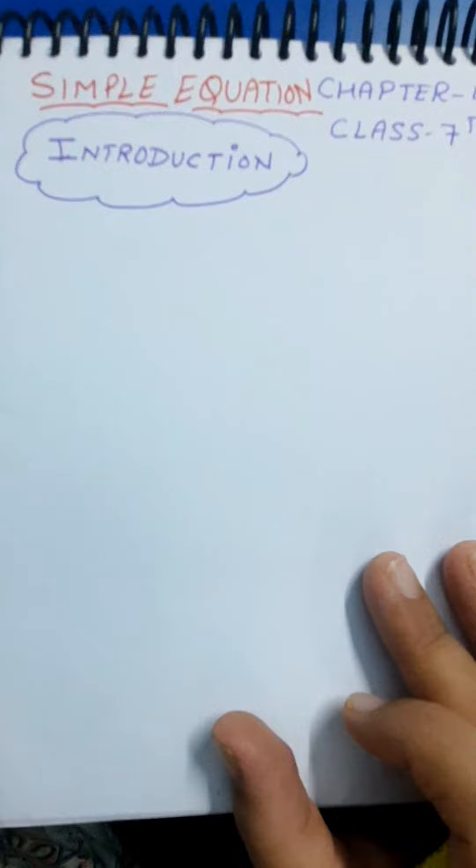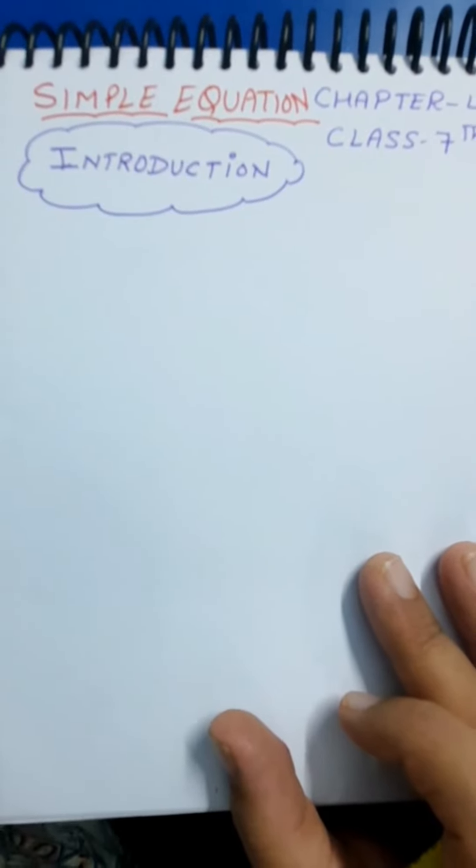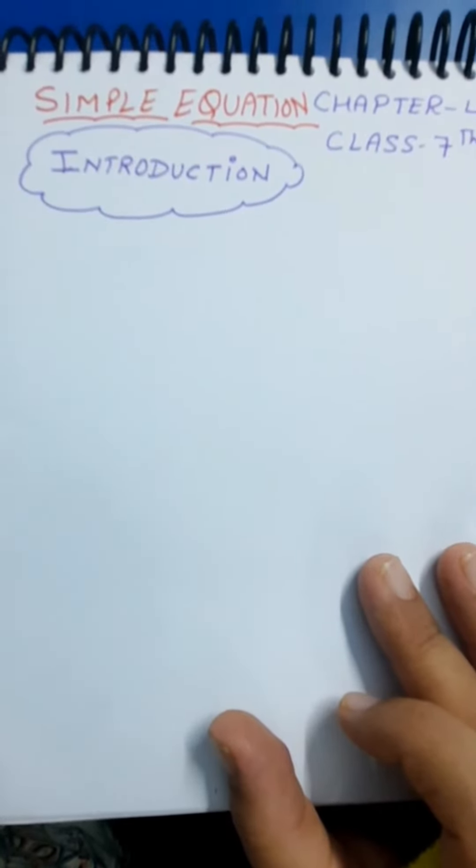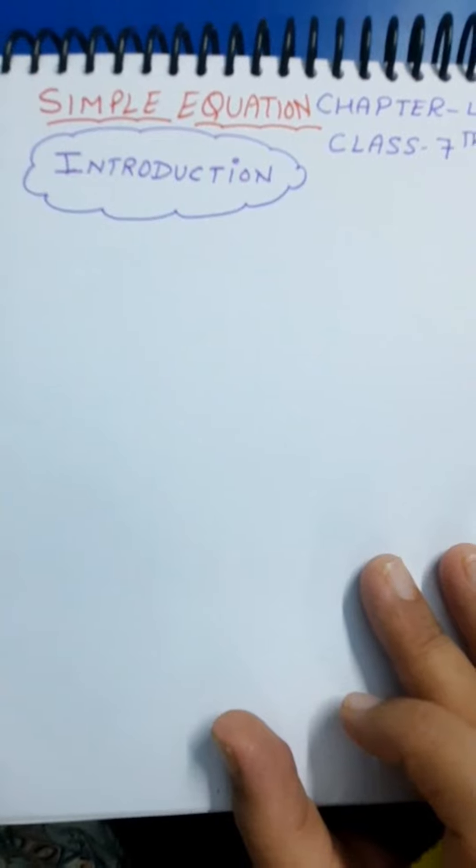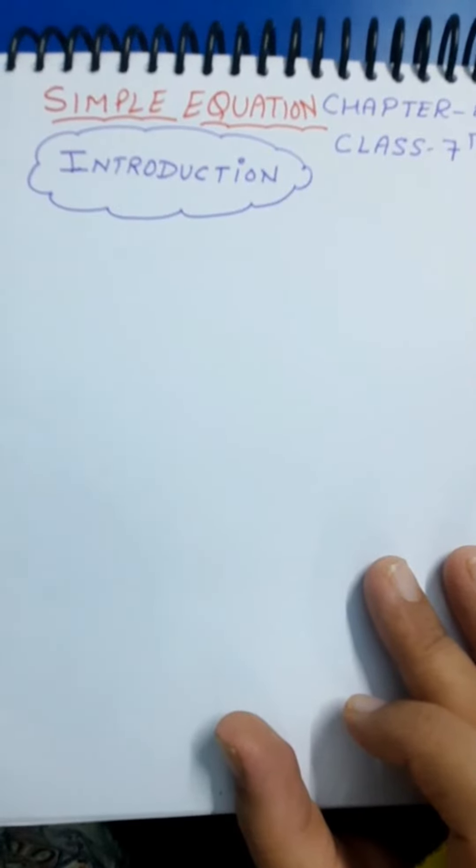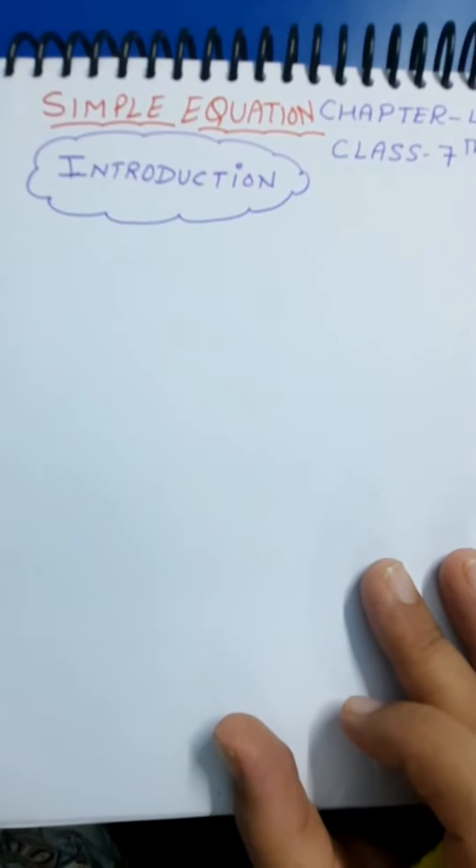So let's recall what's an equation. Equation is a condition on a variable, and the word variable means something that can vary. It means the values of variables can be changed, it is not fixed, we can change.